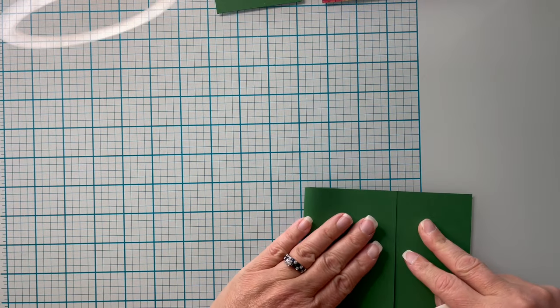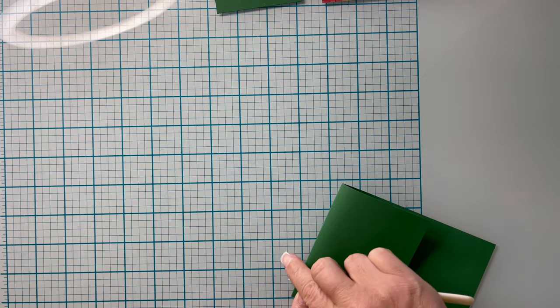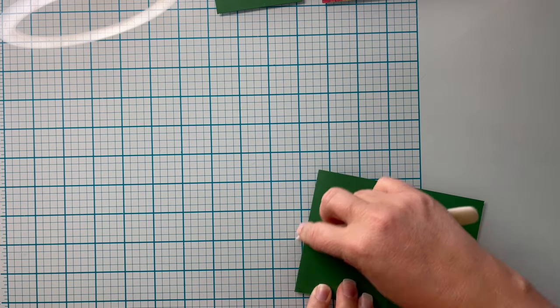Using a bone folder I'm going to press both of the score lines on the two pieces of cardstock.